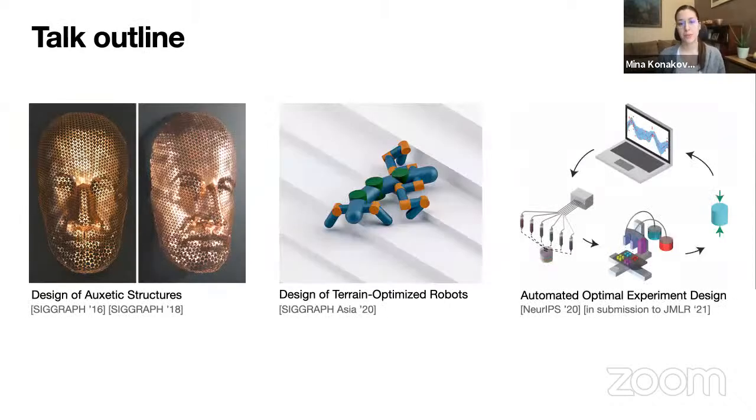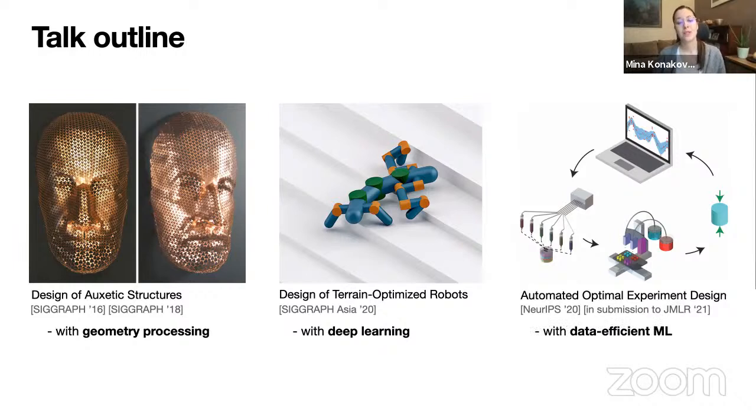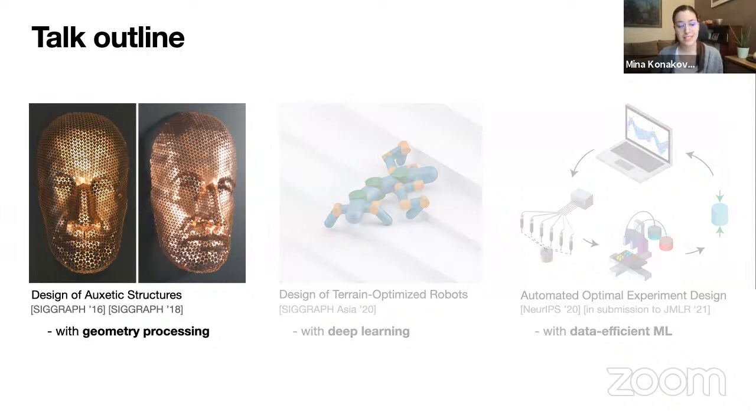Throughout this talk, I will show you three different projects. In my PhD work, I mostly focused on problems with geometry processing. We used the insights from discrete differential geometry to enable computational design and fabrication. But after that, when I moved to do a postdoc at MIT, I started cheating on geometry with some machine learning algorithms, where we used deep learning to design terrain-optimized robots and we used data-efficient machine learning to automate the process of optimal experiment design. Without further ado, let me start. And because this is a geometry processing colloquium, I will spend more time on the first project and a bit less time on the last two.